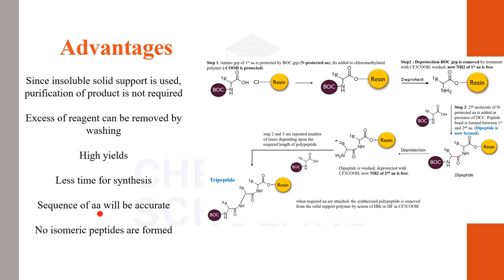We decide exactly which amino acids to add and in what sequence — same, two different, or three different amino acids in a particular order — so we can synthesize any peptide chain as desired. Because groups are protected, no side reactions occur, no isomeric products are formed, and it is a very clean, green reaction giving the desired polypeptide chain. This was Merrifield peptide synthesis. The next video will be on the structure of proteins.